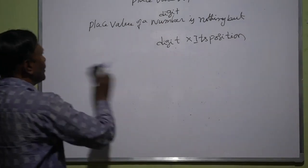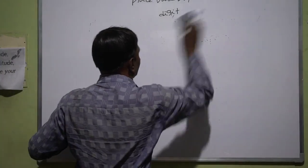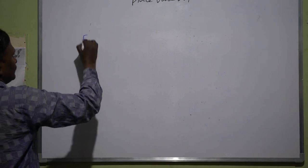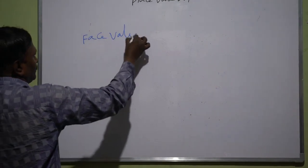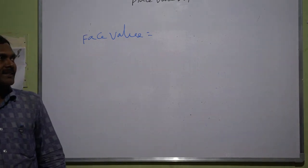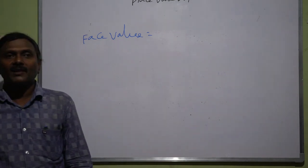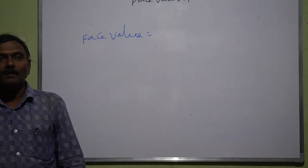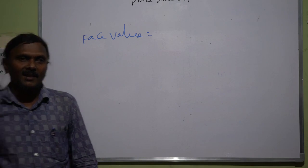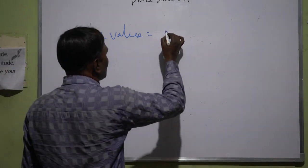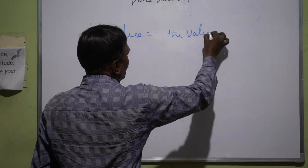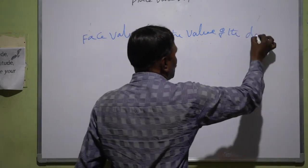Next, we will see the face value. What is the face value? Face value of a digit is nothing but the digit itself only. The face value of a number is nothing but the digit itself, wherever it may be. Face value is equal to the value of the digit only.